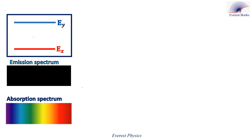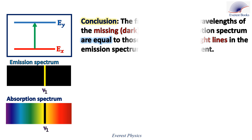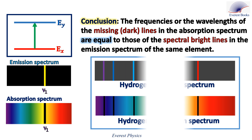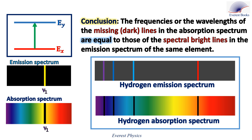All atoms of the same element have the same set of energy levels. This diagram shows two energy levels, Eₓ and Eᵧ, of a hypothetical atom. When the atom makes a downward transition from Eᵧ to Eₓ, it emits a photon of frequency ν₁. When the atom is excited from Eₓ to Eᵧ, it absorbs a photon of the same frequency ν₁. Therefore, the frequencies — or wavelengths — of the dark lines in the absorption spectrum are equal to those of the bright spectral lines in the emission spectrum of the same element. Looking at the emission and absorption spectra of hydrogen, where we have colored lines in the emission spectrum, we have black lines in the absorption spectrum.